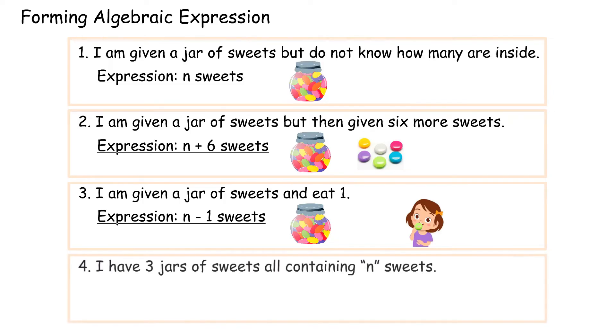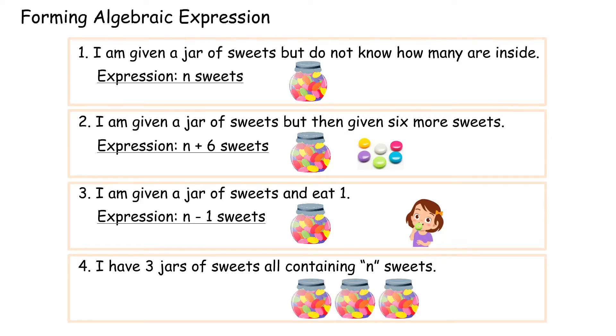Example 4: I have 3 jars of sweets, all containing n sweets. Expression: 3n sweets.